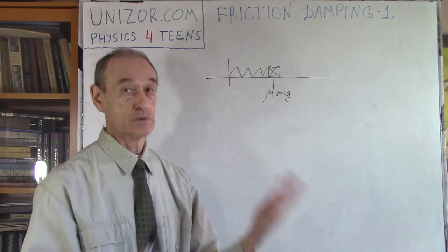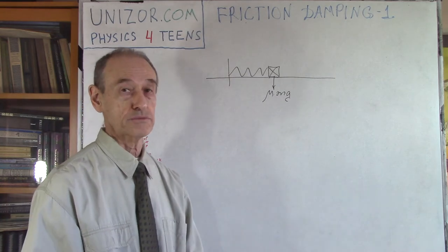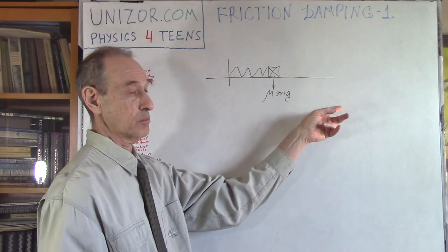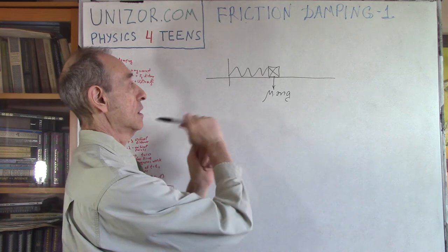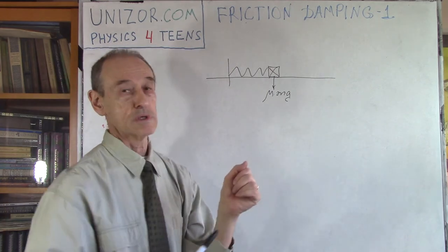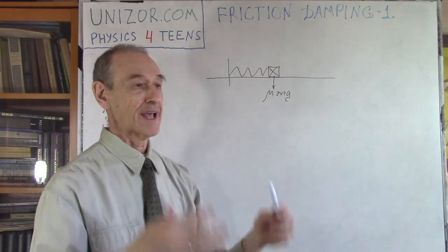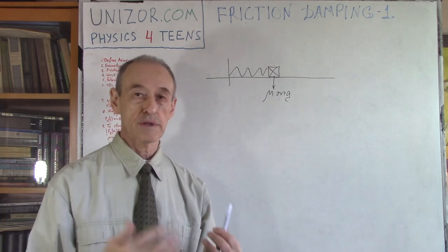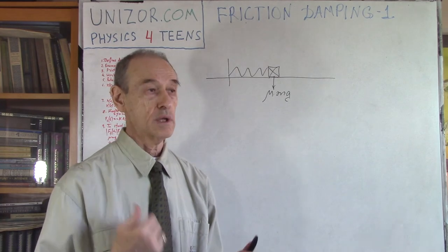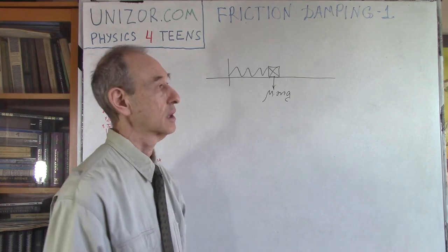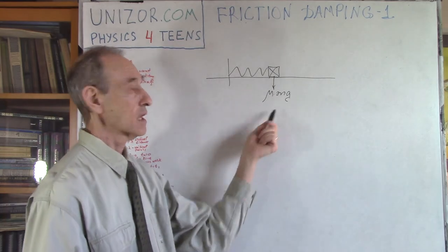The friction force always acts against the direction of movement. If there is no movement, there is no friction. But if there is movement left or right — when the body moves to the right, the friction force acts to the left, and if the body moves to the left, the friction force is directed to the right. So it's always resisting. Damping is the gradual reduction of the intensity of the movement — in this case, intensity of oscillations. That's what damping actually is: damping as a result of friction.